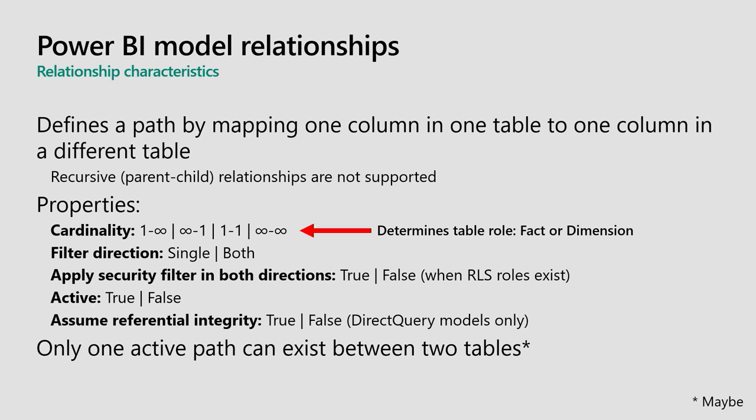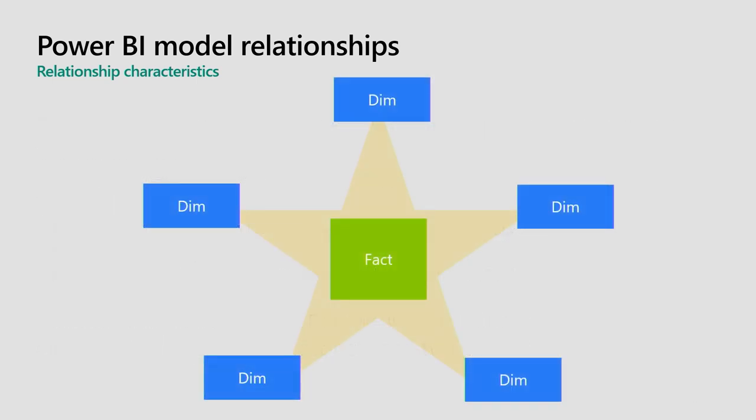It is the cardinality property that determines the role your table plays. Which side of the relationship carries the cardinality determines whether a table behaves as filter/group (dimension) or summarize (fact). In a star schema pattern, the one side is always on the dimension table side—containing unique values like product SKUs—while the fact table side contains duplicates, since the same product is hopefully sold more than once.